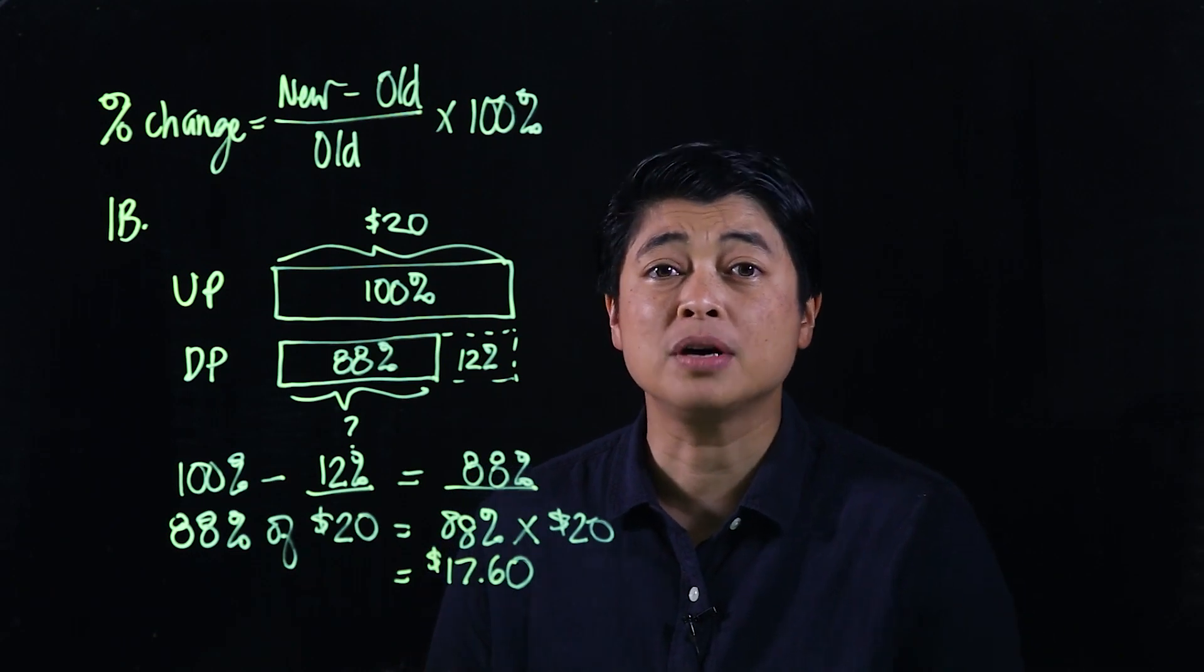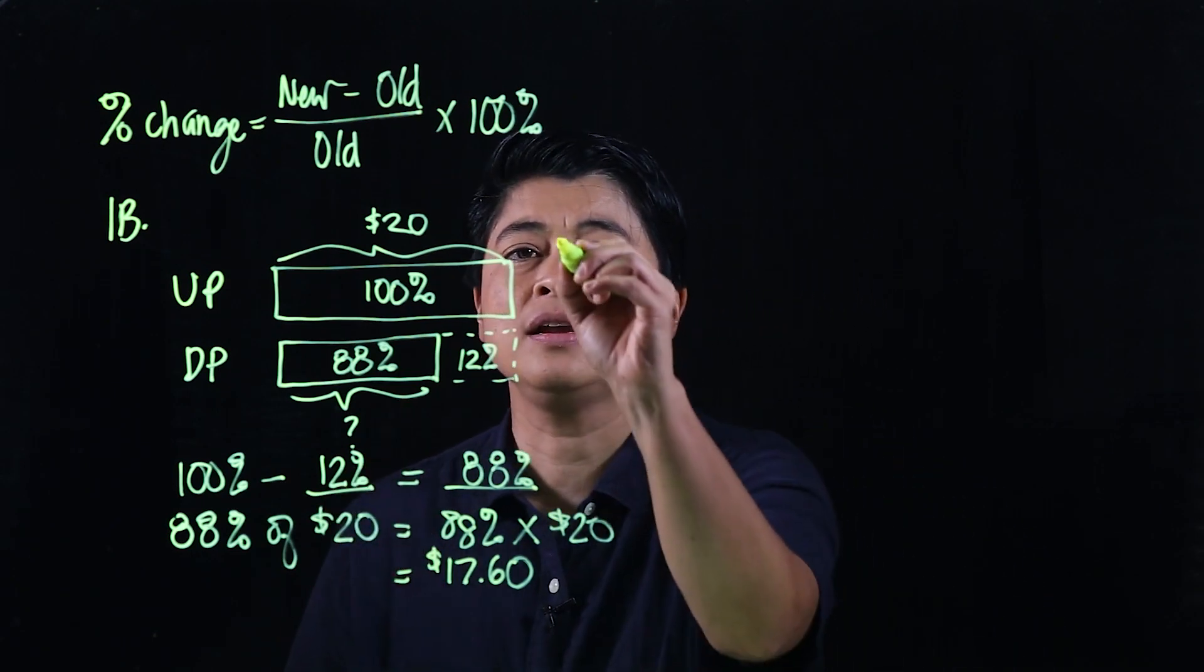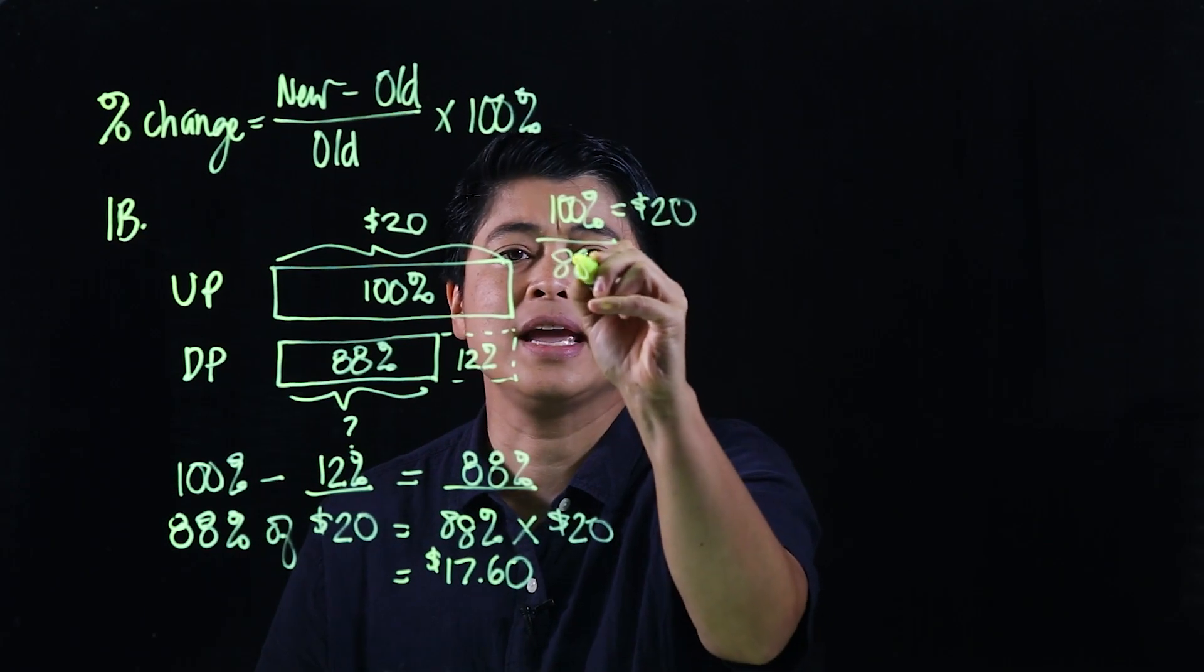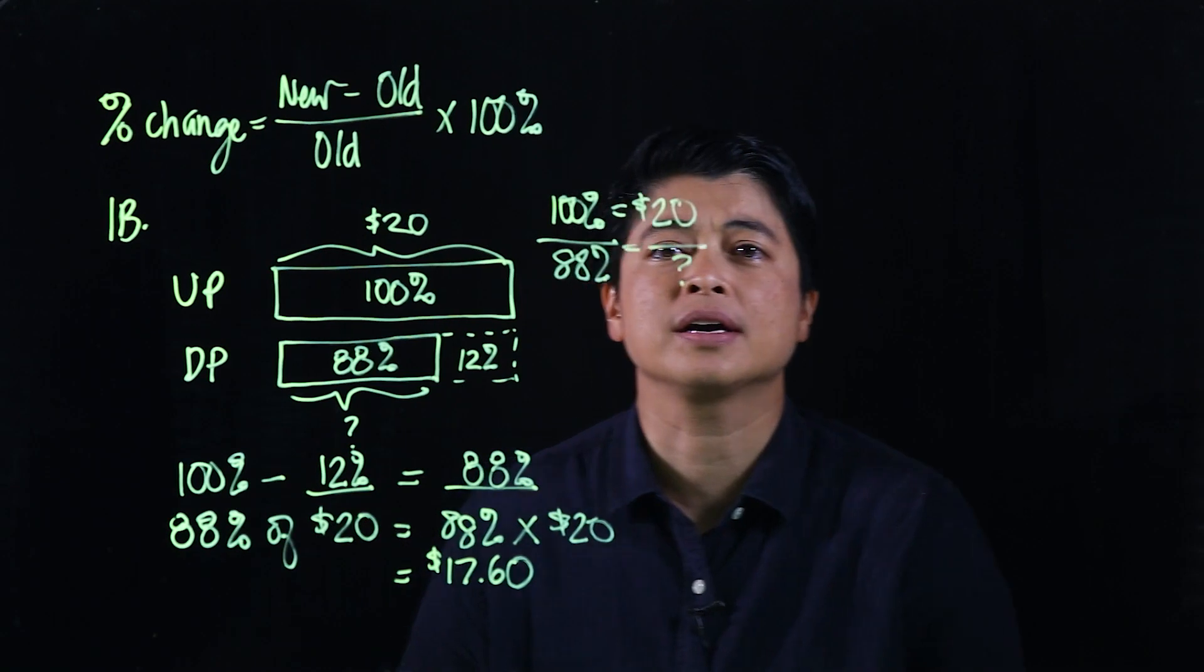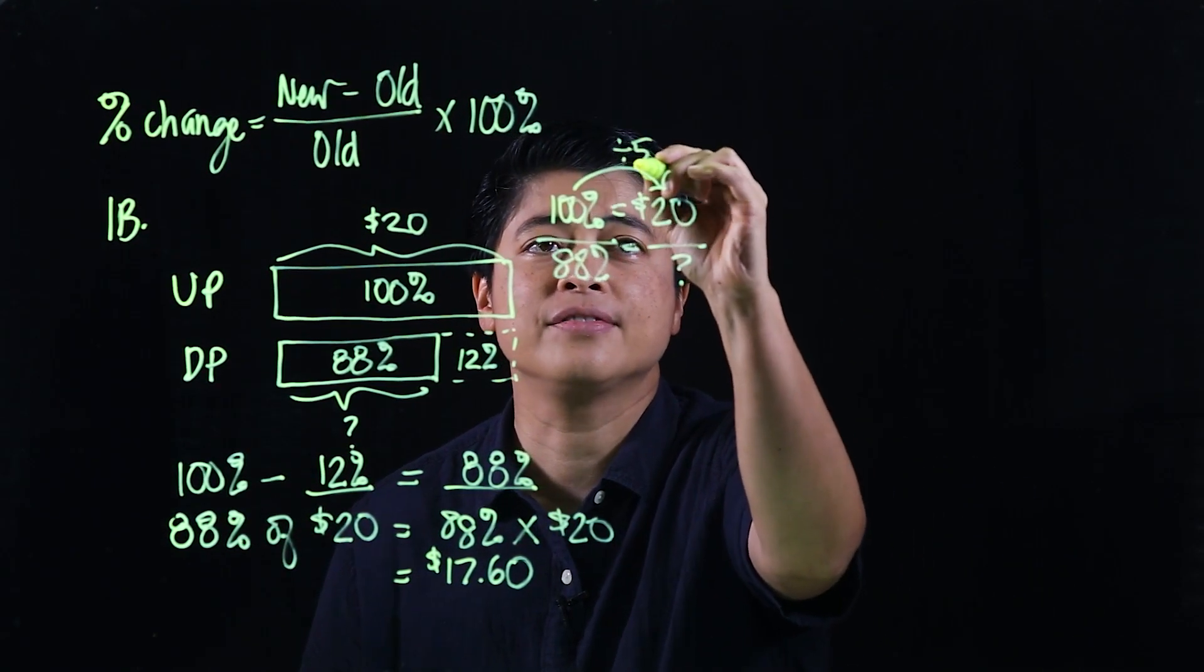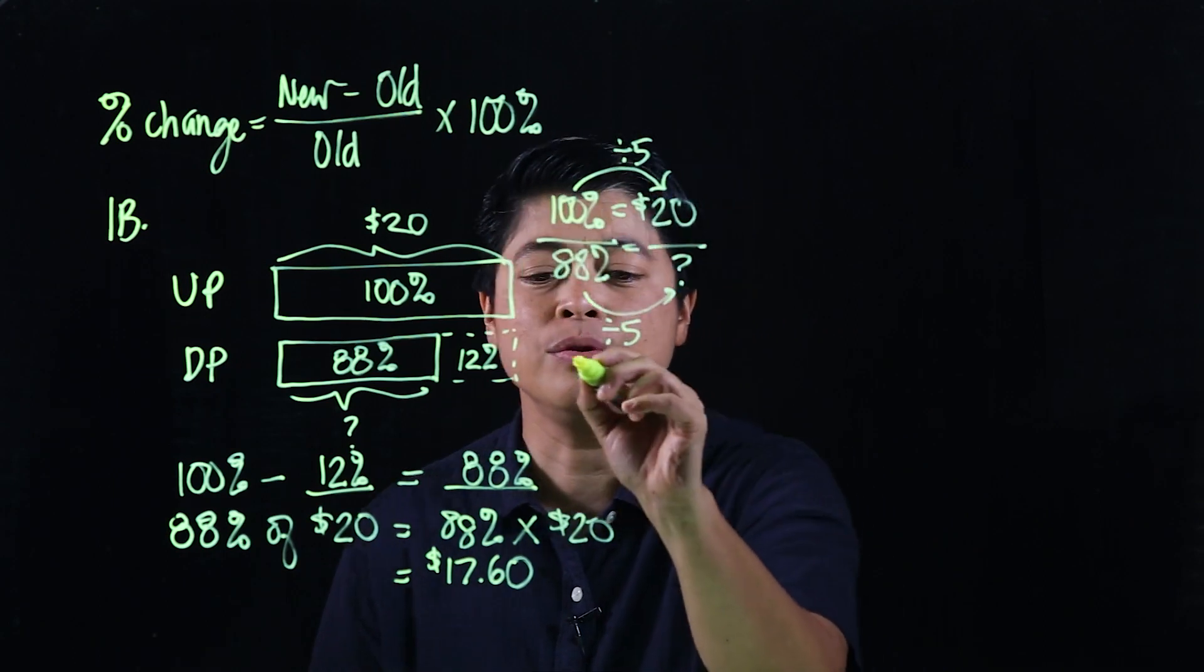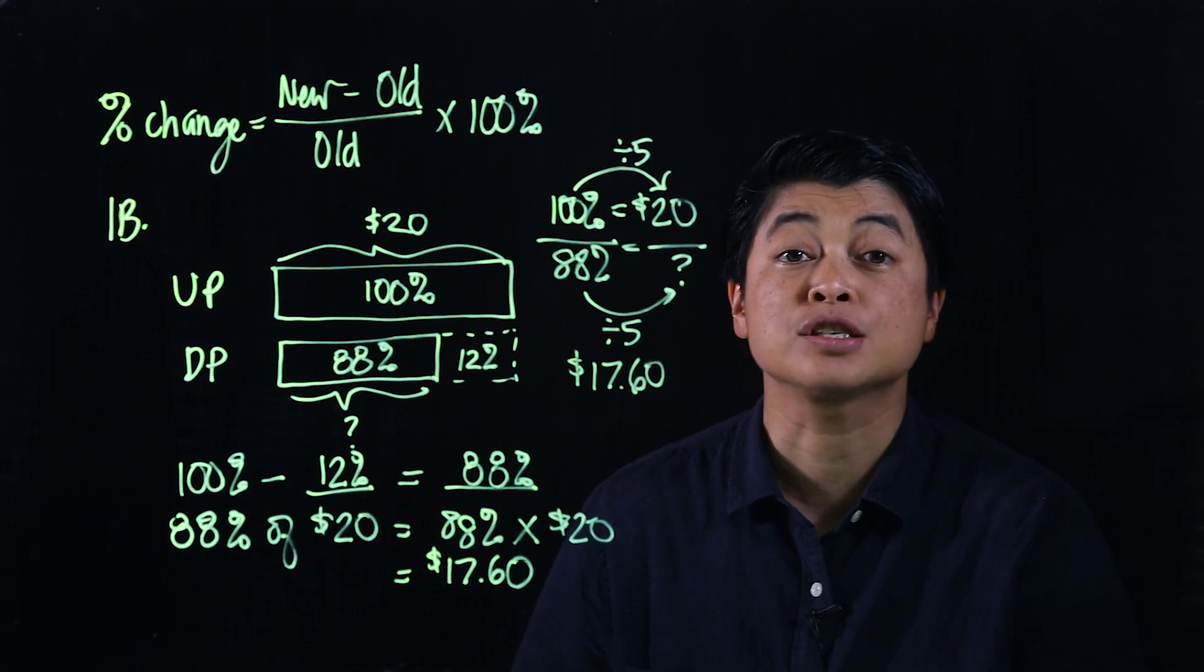Okay, so that's the book approach. If I do my approach, it would have been 100 percent is $20, which means 88 percent is blank question mark. So clearly here this is divide by 5. So if I divided by 5, I should divide by 5 as well. And when I do, I will or I should get $17.60 as well.